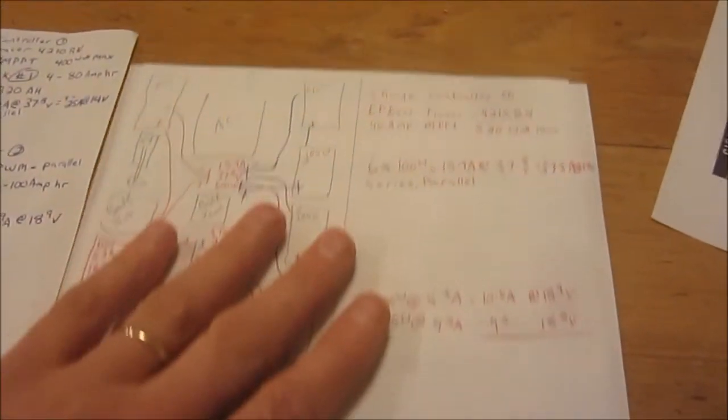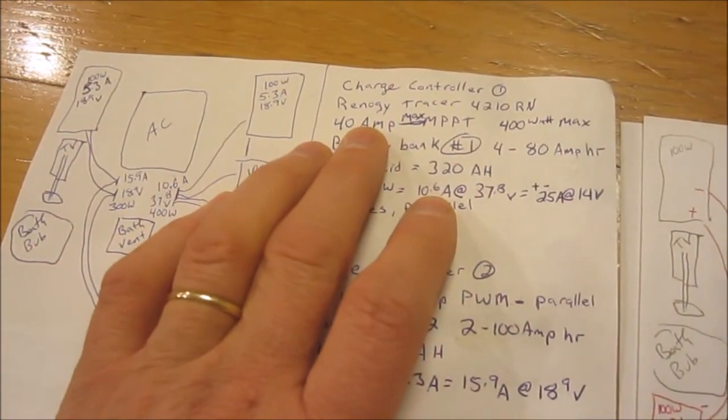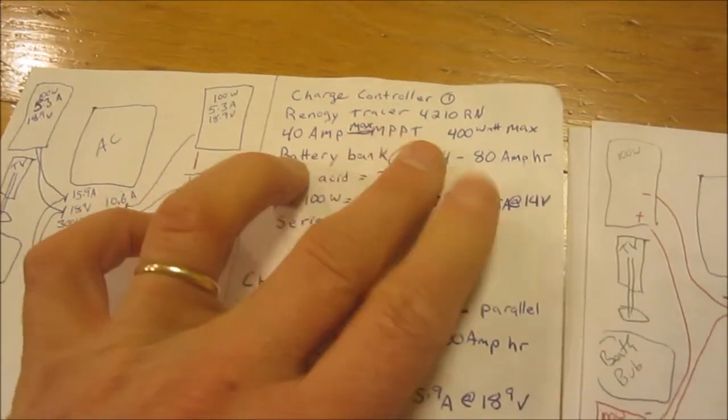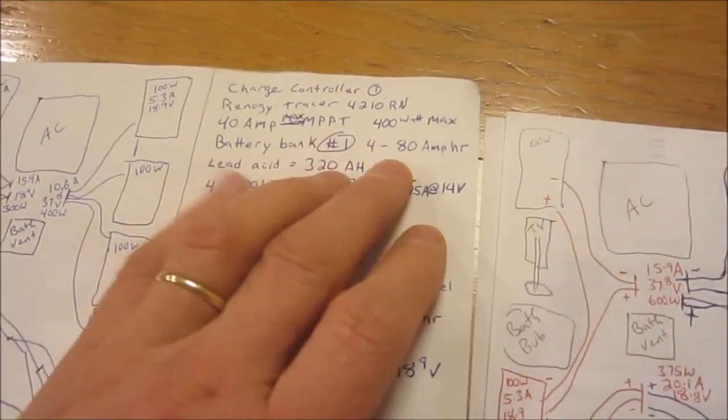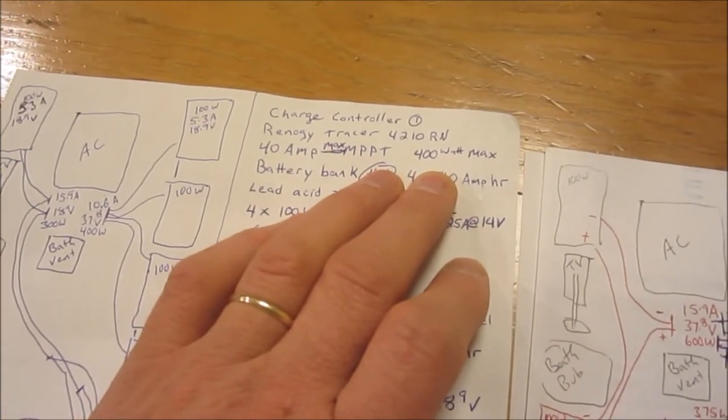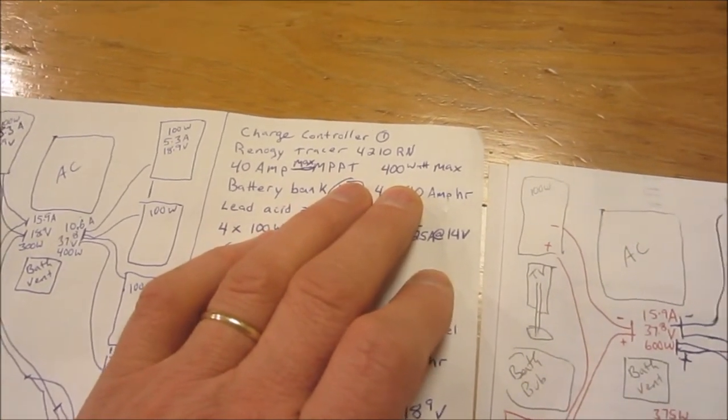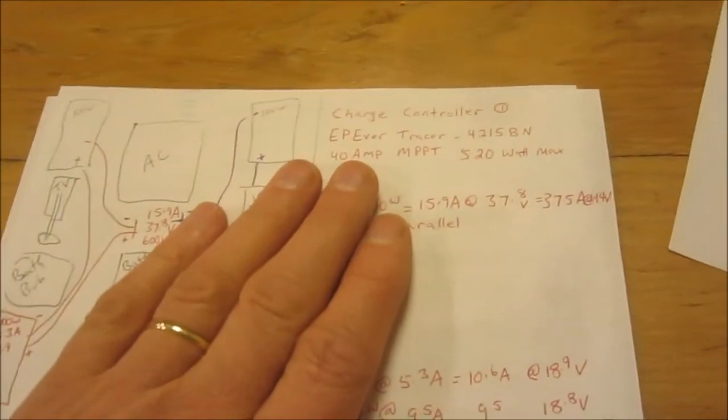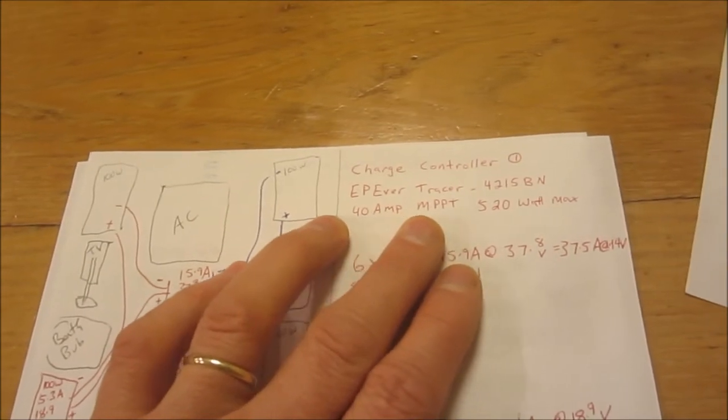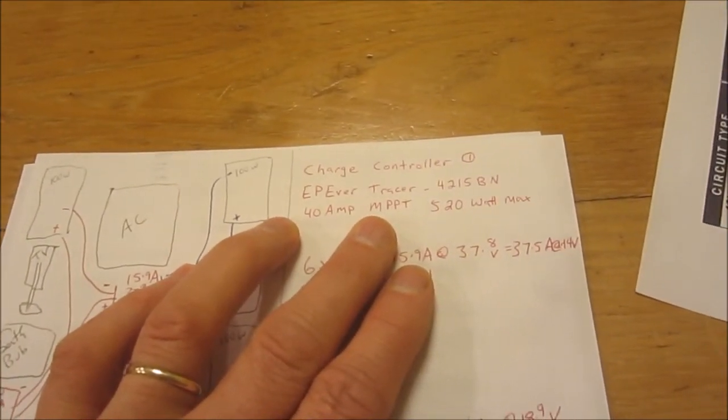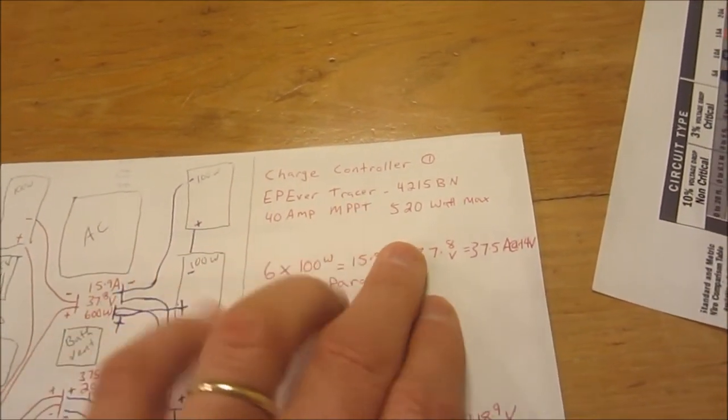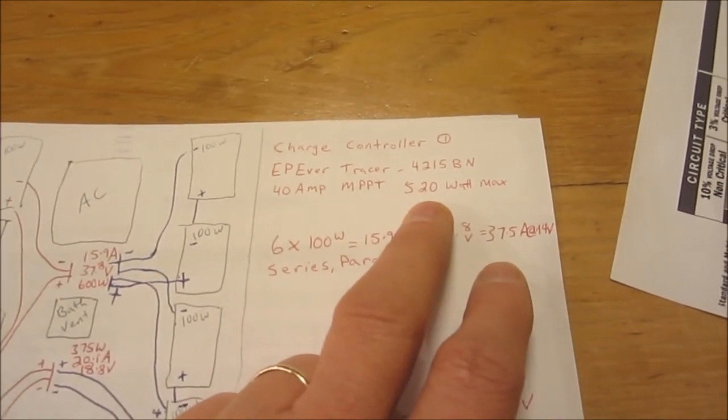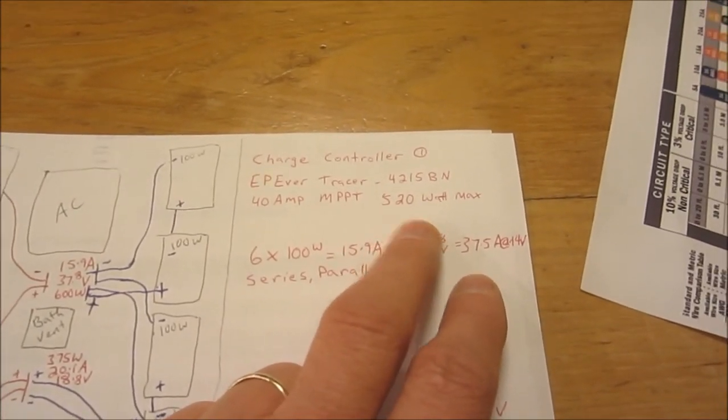As you can see though, now I'm going to be maxed out on my Renogy charge controller, the Tracer 4210, because its maximum wattage is 400. So I'm getting a new EPever Tracer 4215 BN. Its maximum watts is 520. Well, I'm putting out 600, why would I do that? I've already got an undersized controller.